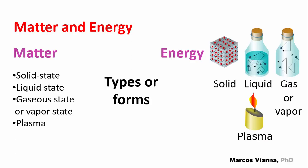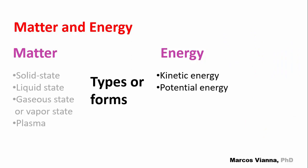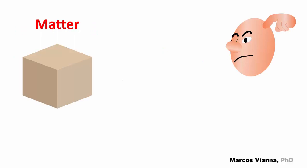Matter can exist in solid state, liquid state, gaseous state or vapor state, and plasma. Energy can be classified as kinetic energy and potential energy. But let's begin by talking about matter.